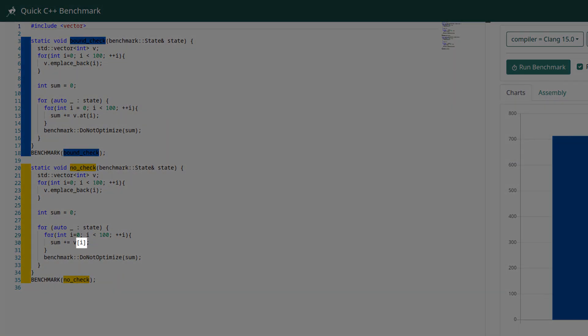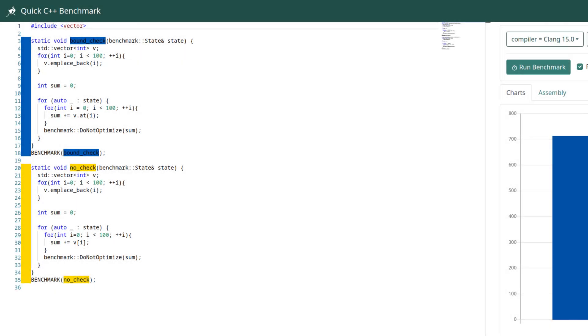Unlike vector at, the subscript operator doesn't do bound checking. How much faster do you think the no check version will be? Maybe 25% because one out of four steps was removed? Maybe 50% in case the bound check is more expensive relative to the other steps?